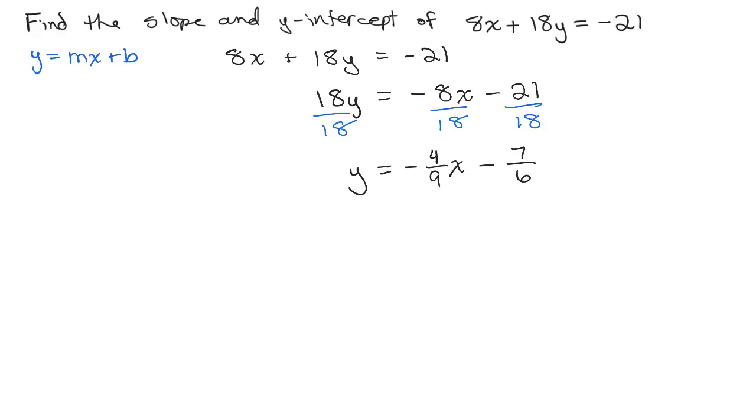So now I have it in the right form. I see that the slope, the coefficient of x, is negative 4/9.